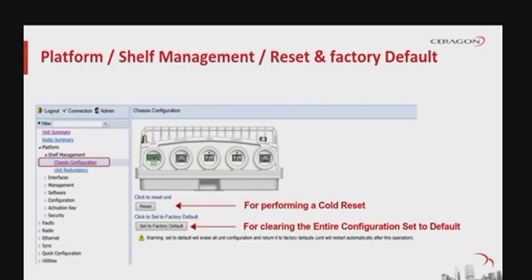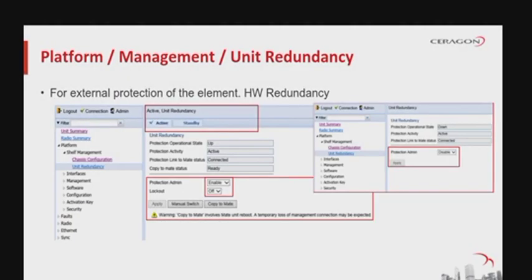This menu sub-part covers reset of the machine. Reset and set-to-default are two very different commands — please make sure which one you are committing to. For clearing the entire configuration on the network element, you need set-to-default. For creating an external protection group such as 1+1 or 2+2 hot standby, you will need two IP20C units and start the process from Platform > Management > Unit Redundancy.